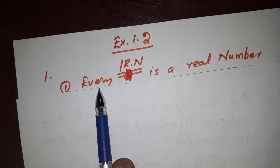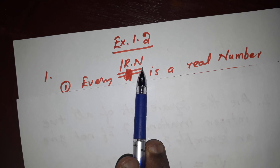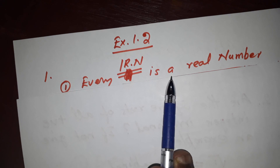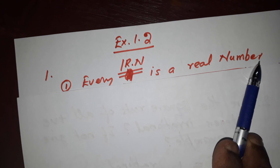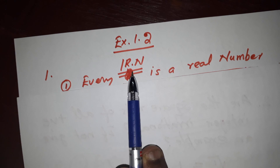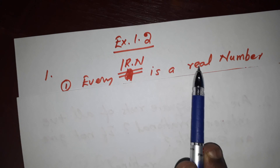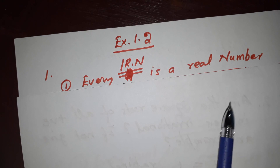The 2nd statement is: Every irrational number is a real number.